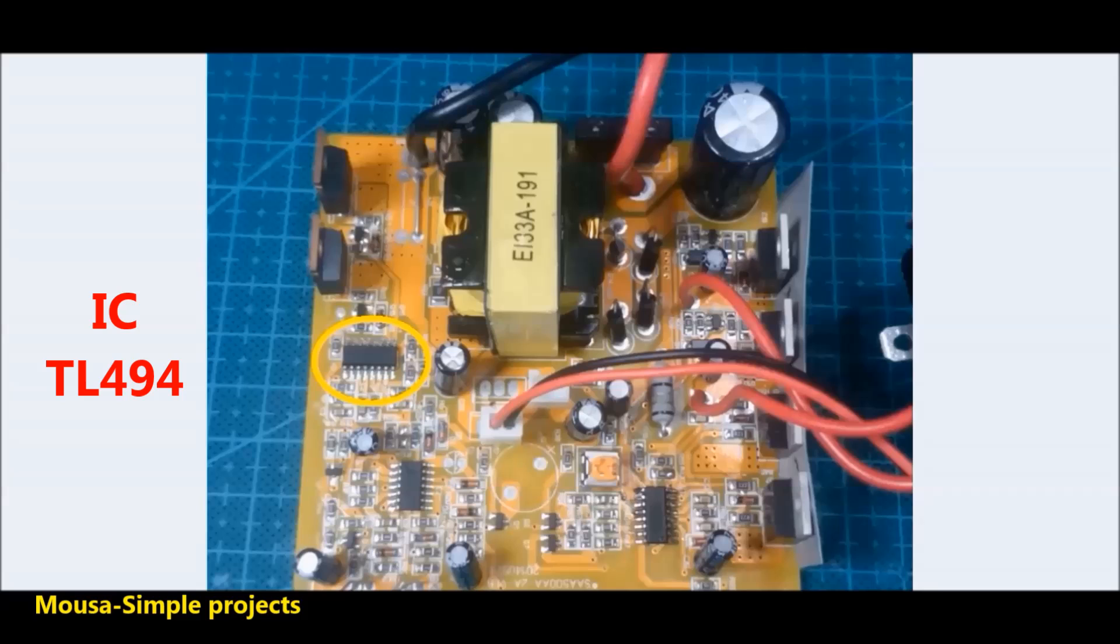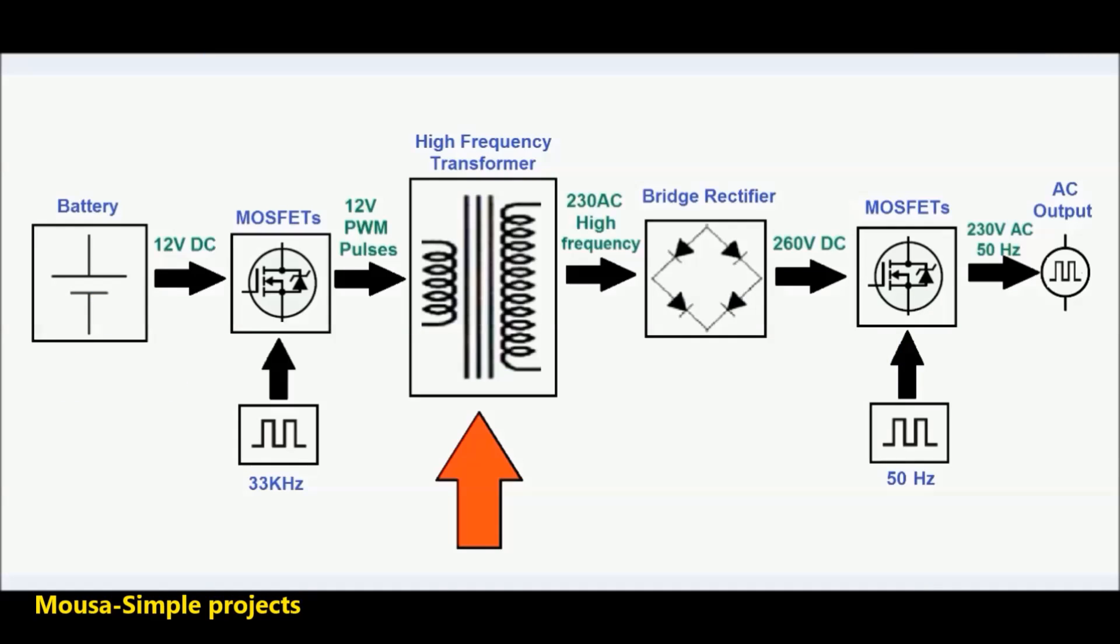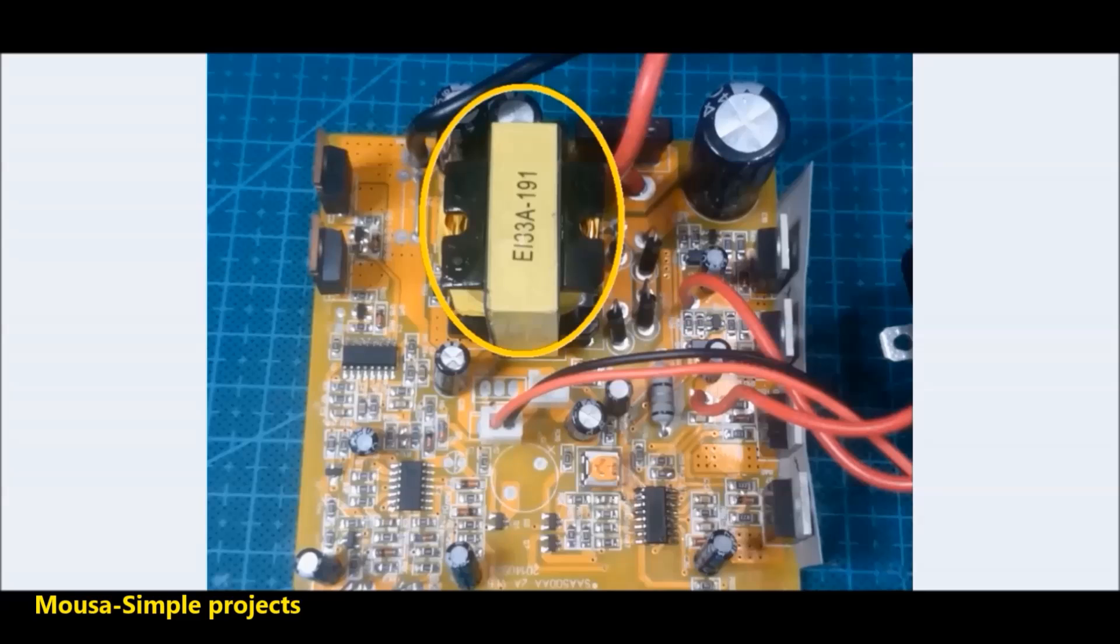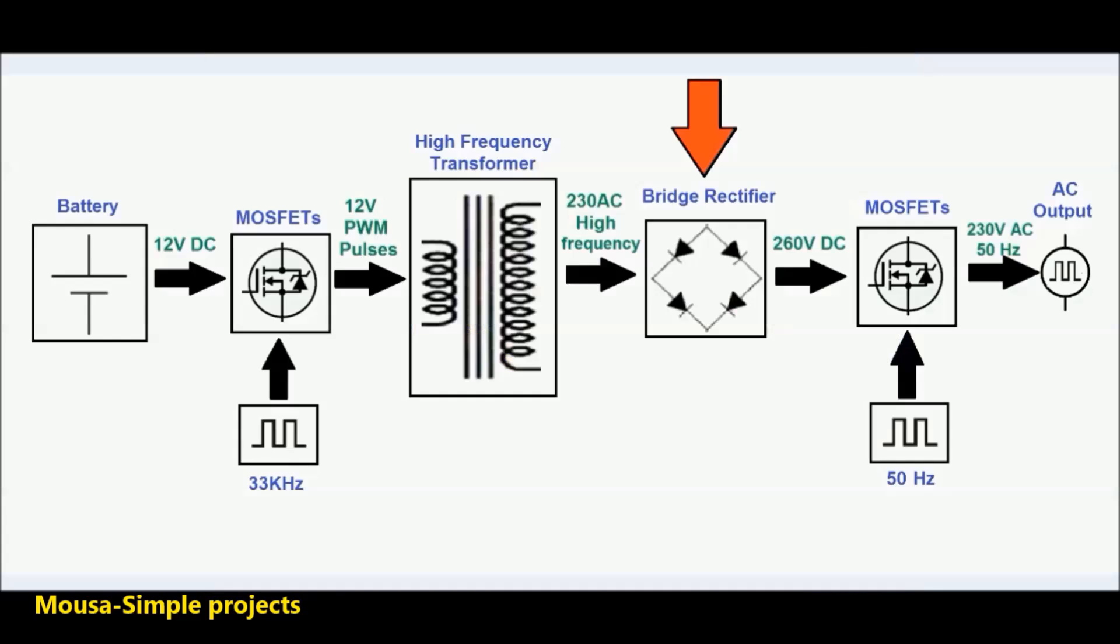So the 12 volt continuous voltage converted to 12 volt PWM pulses and goes to the transformer inputs. The output voltage of this transformer will be 230 volt AC.